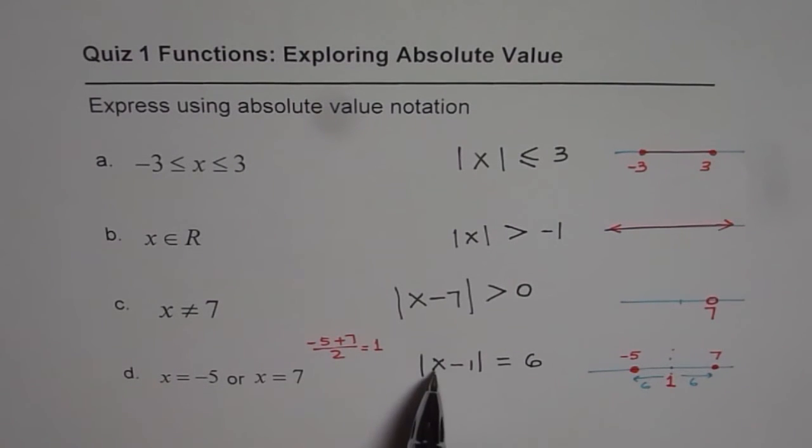x equals to minus 5. If I write minus 5 here, I get minus 6, absolute value of minus 6 is 6. If I write 7 for x, 7 minus 1 is 6, and absolute value of 6 is 6.